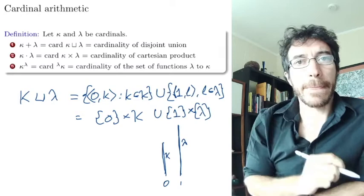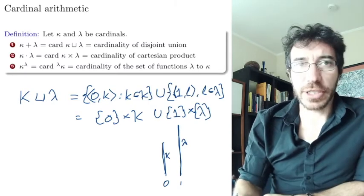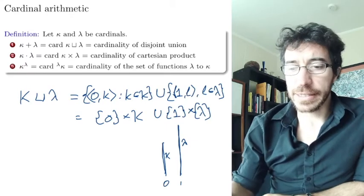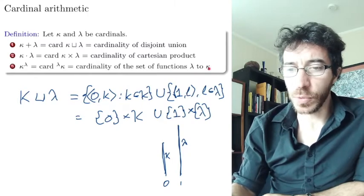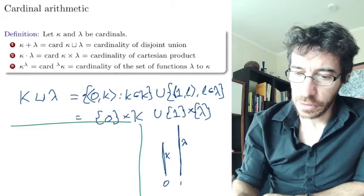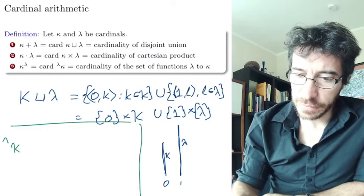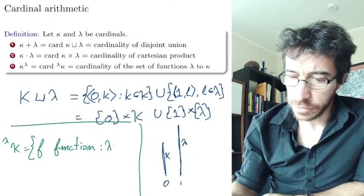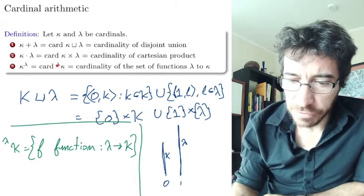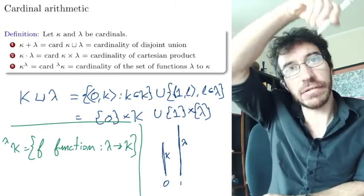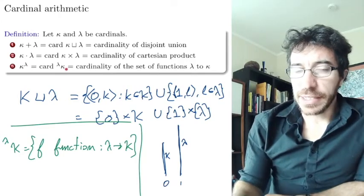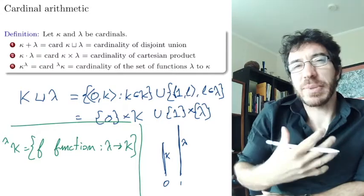We can also define exponentiation on cardinals. Kappa to the power of lambda is the cardinality of the set of functions from lambda to kappa. The textbook uses the notation that kappa to the lambda (with lambda on the left) denotes the set of all functions from lambda to kappa. Kappa to the lambda with lambda on the right is the cardinality of that — so it represents the size of that set.